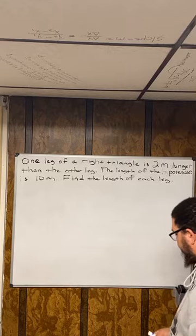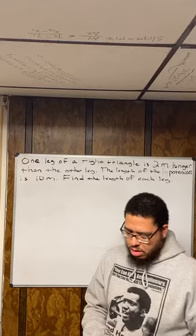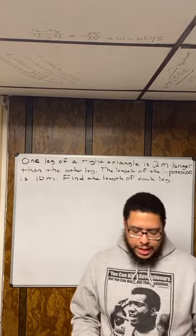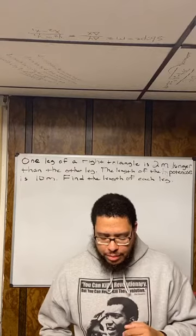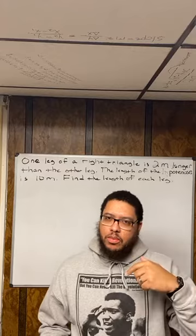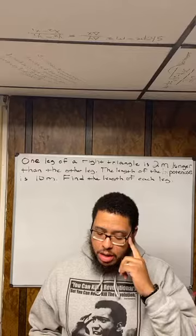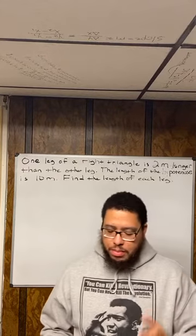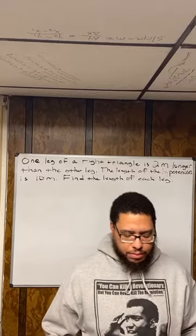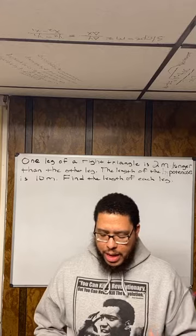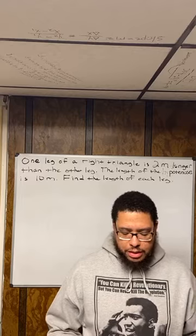As we read this, it says that one leg of a right triangle — that's key, the fact that we're dealing with a right triangle. That should start clicking for us and we should start thinking about what formula would I use, what formulas are relevant when we deal with right triangles. One leg of a right triangle is two meters longer than the other leg. The length of the hypotenuse is ten meters. Now, find the length of each leg.